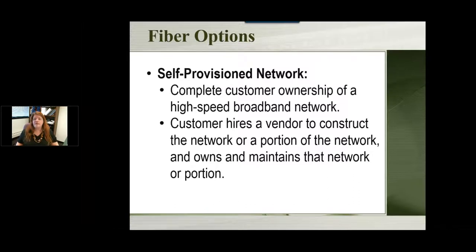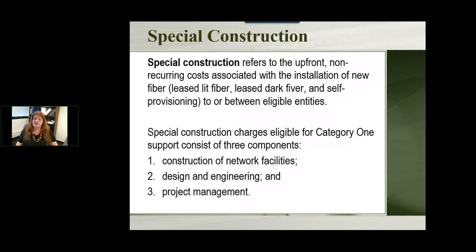Another way to get a fiber option is a self-provisioned network — where you as the library actually own it yourself. You hire someone to get it connected but then you own and run that network yourself. Special construction — anything related to installing fiber, dark, lit, or self-provisioned — is also eligible for E-Rate discount. So it's not just your monthly bill; one-time construction costs, project management fees, and costs related to preparing for it can all be done as a Category 1 request.